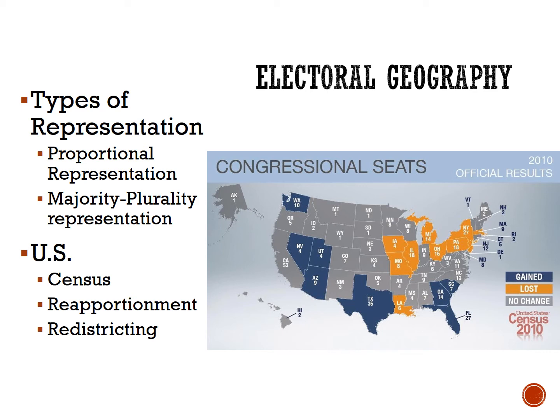People move and populations shift, so every 10 years we have a census, which counts the population of every state throughout the entire country. We can then compare which states grew in population and which states shrank, largely a product of internal migration. Then we undergo a process called reapportionment — the process by which districts are moved according to population shifts so that each district encompasses approximately the same number of people across the entire country.